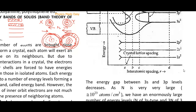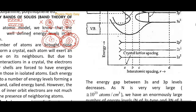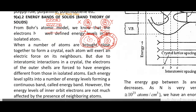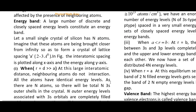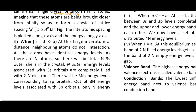This topic is important from the theory examination point of view, even if not directly from JEE Main. Energy bands are defined as a large number of discrete and closely spaced energy levels that together constitute an energy band. At large interatomic distances there is no interaction between atoms, so only discrete orbits exist.